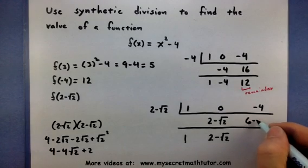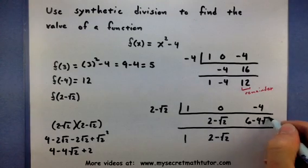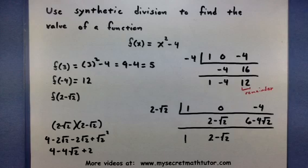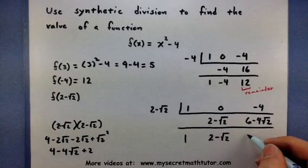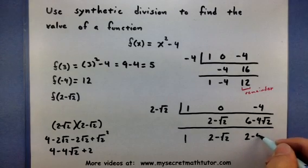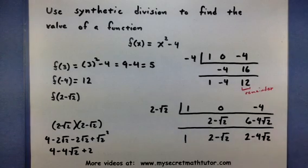So 6 minus 4 square root of 2. Boy, that was a lot of work. Let's get on to the last column here. We're going to take it and add it with a negative 4, and so this will give us 2 minus 4 square root of 2.